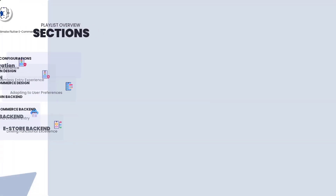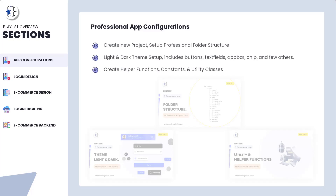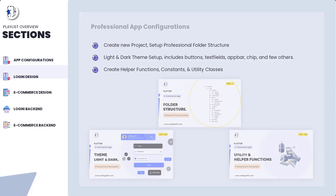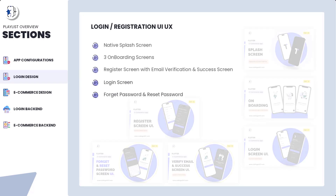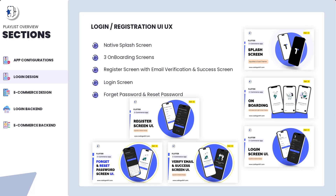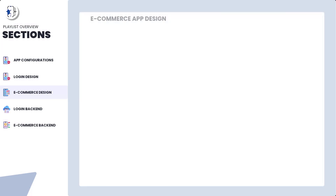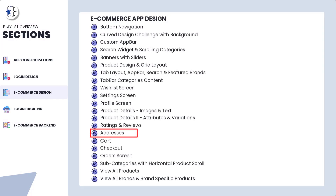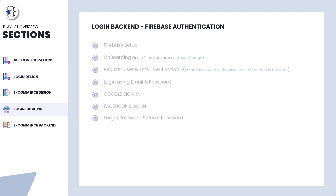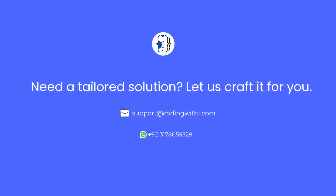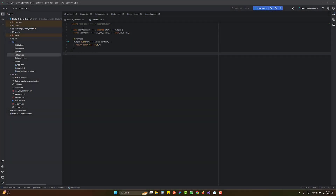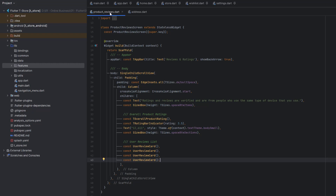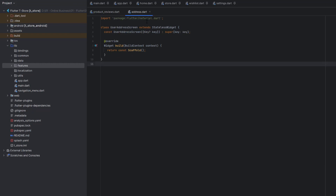We are creating a Flutter e-commerce application. We already completed section one for the basic project setup, and in section two we already learned how to design a complete login with forgot password, splash screen, and onboarding screen. Currently we are on the design section, and from the next section onwards we are going to start our backend. In the previous tutorial we learned how to design the product reviews — I'll drop the link of the complete playlist in the description. Today we are going to create the addresses screen.